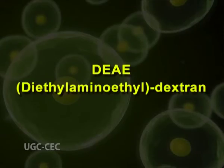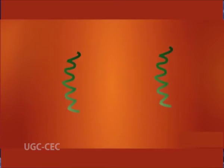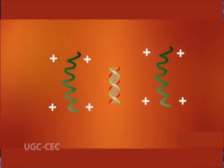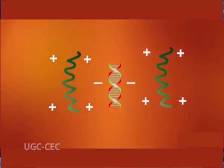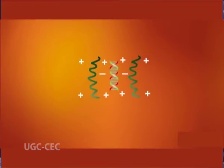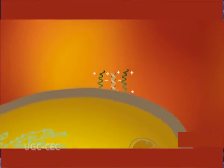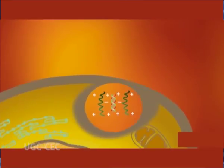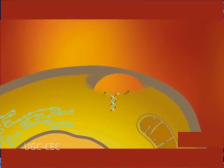Diethylaminoethyl dextran (DEAE) method: Bahari and Pagano verified this method in 1965. DEAE is a water-soluble polycationic derivative of dextran. DNA is mixed with DEAE in transfection solution, forming a complex that articulates with negatively charged cell membrane residues, inducing endocytosis so the complex is taken inside. This is a convenient and less expensive method; however, the transfection efficiency may be low, and it is difficult to generate stable lines by this method.